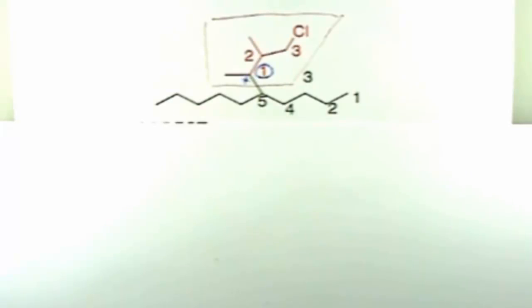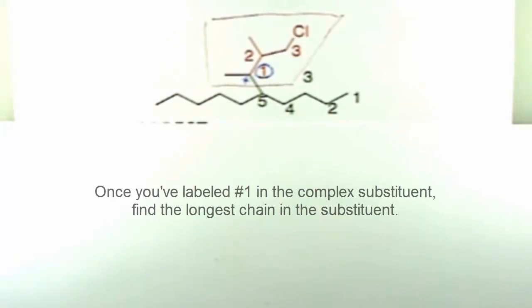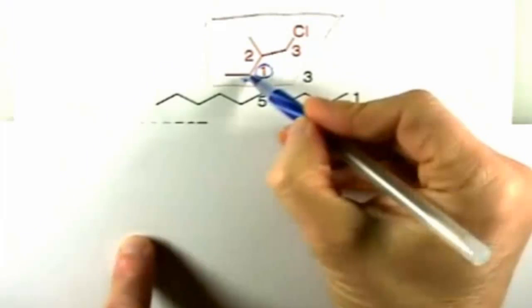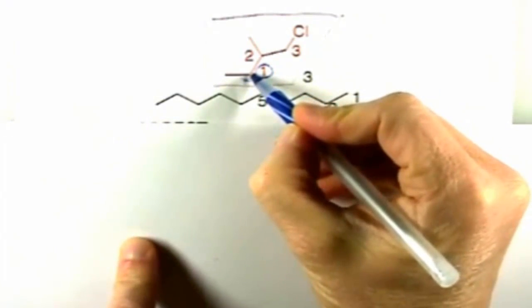You want to find the longest chain that includes carbon one. So you start at carbon one, and you go off in different directions from carbon one, and whatever the longest chain is, you find that emanates from this carbon is going to be the longest chain.